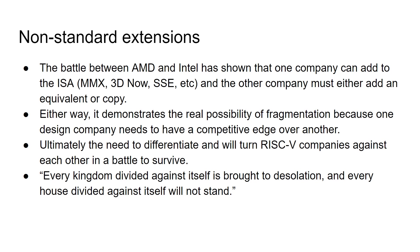Why would you buy my chip rather than somebody else's chip? Ultimately, the need to differentiate will turn RISC-V companies against each other. AMD and Intel are not friends — they are not friends, but they use the same ISA, the x86 and x86-64 instruction set. They're competitors. They want to outsell each other. Ultimately, RISC-V companies will turn to battle against each other. Every kingdom divided against itself is brought to desolation; every house divided against itself will not stand. Once you start to get competitive things going on, this could actually cause RISC-V to split down the middle — and that's going to be forking.